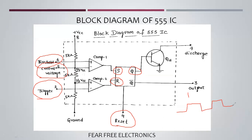The seventh pin is the Discharge. The discharge is connected to the QD discharge transistor. In applications, external resistors and capacitors are added, and this transistor controls the charging and discharging of the capacitor.